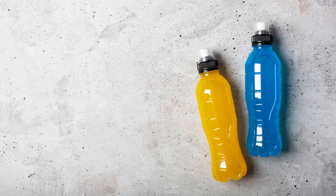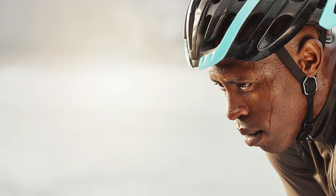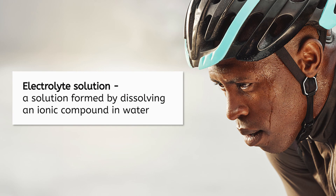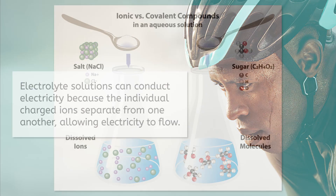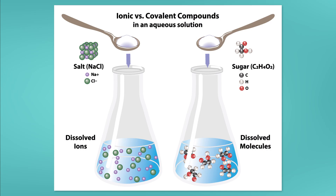Have you ever heard of electrolyte drinks? Often, athletes need to replenish their electrolytes due to losing salt from their body through sweating. Electrolyte solutions are a specific type of solution that involve dissolving ionic compounds, like table salt, in water. These solutions are able to conduct electricity, which is where the name electrolyte comes from. This ability to conduct electricity is caused by the charged ions separating from each other. The term electrolyte solution does not apply to solutions made by dissolving molecules, like sugar, in water, because when molecules dissolve, the individual atoms don't separate — just the individual molecules do.